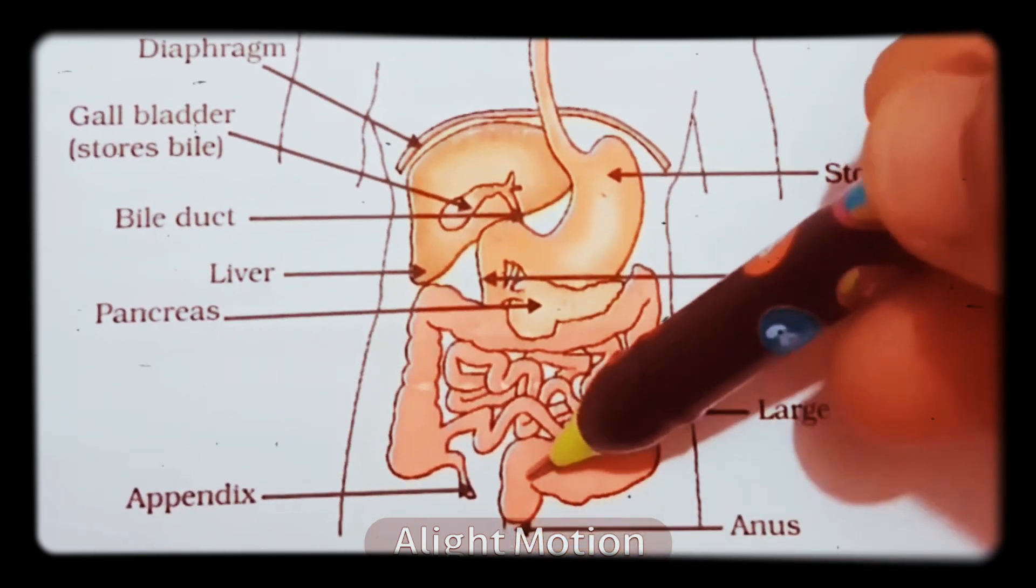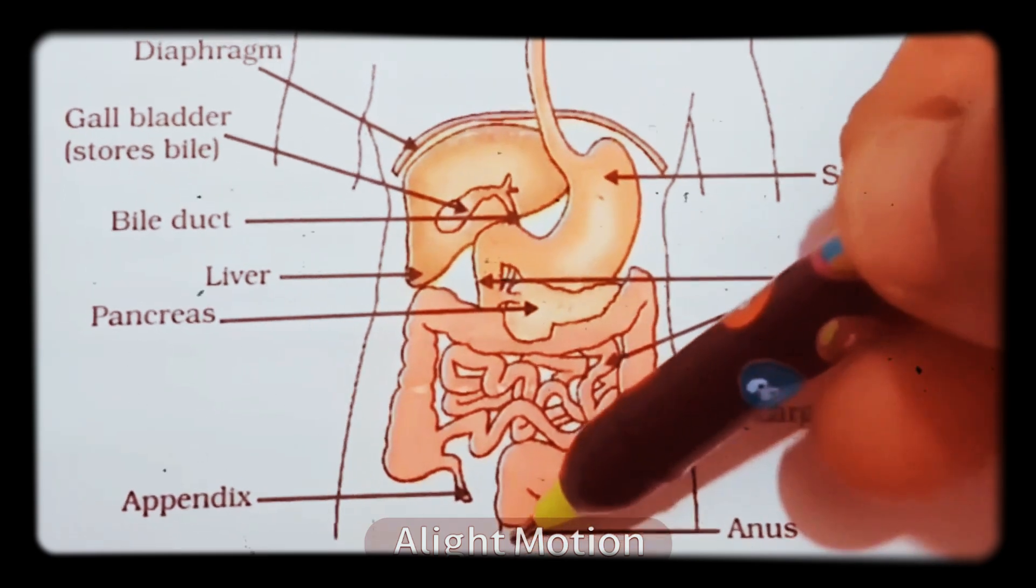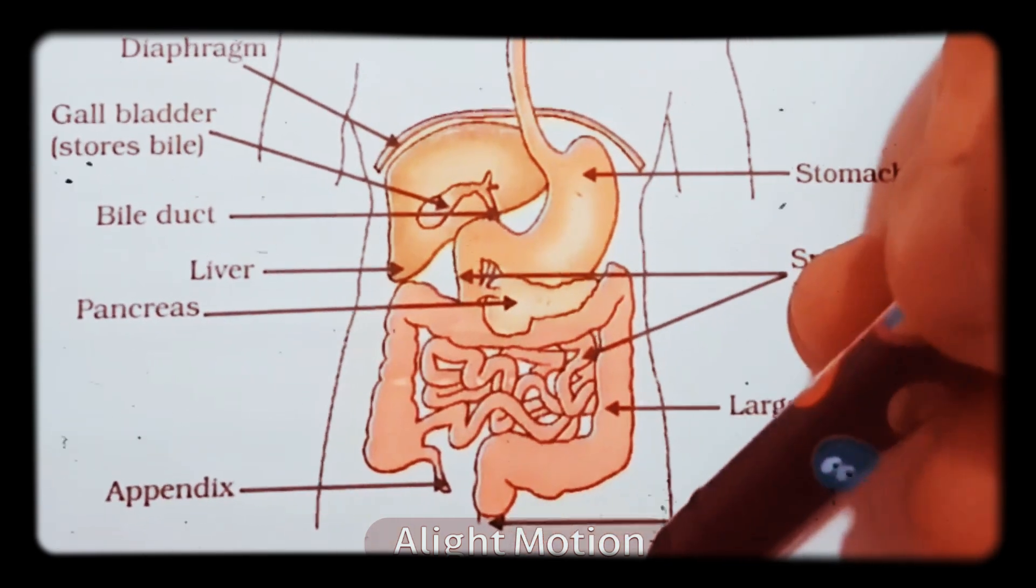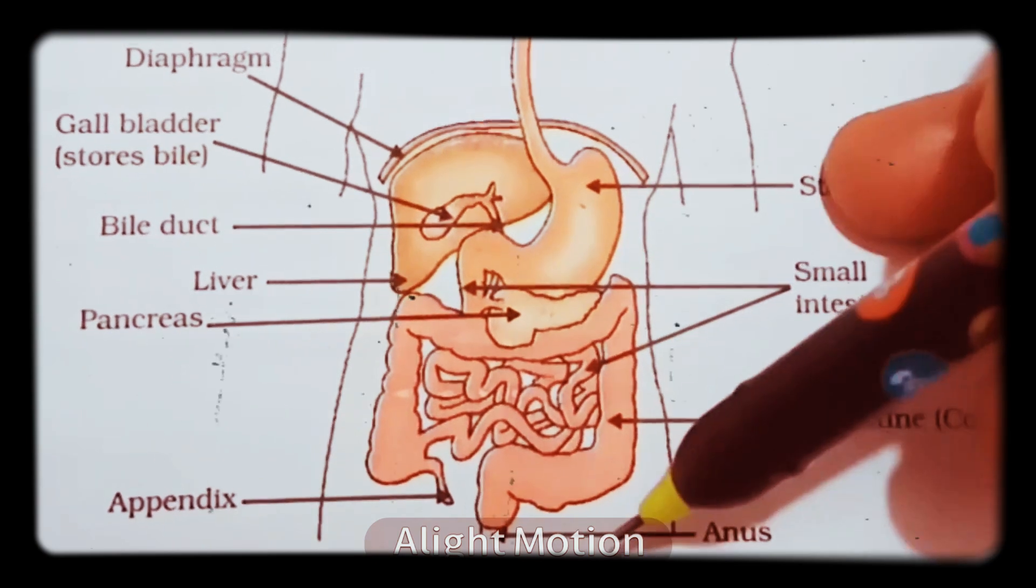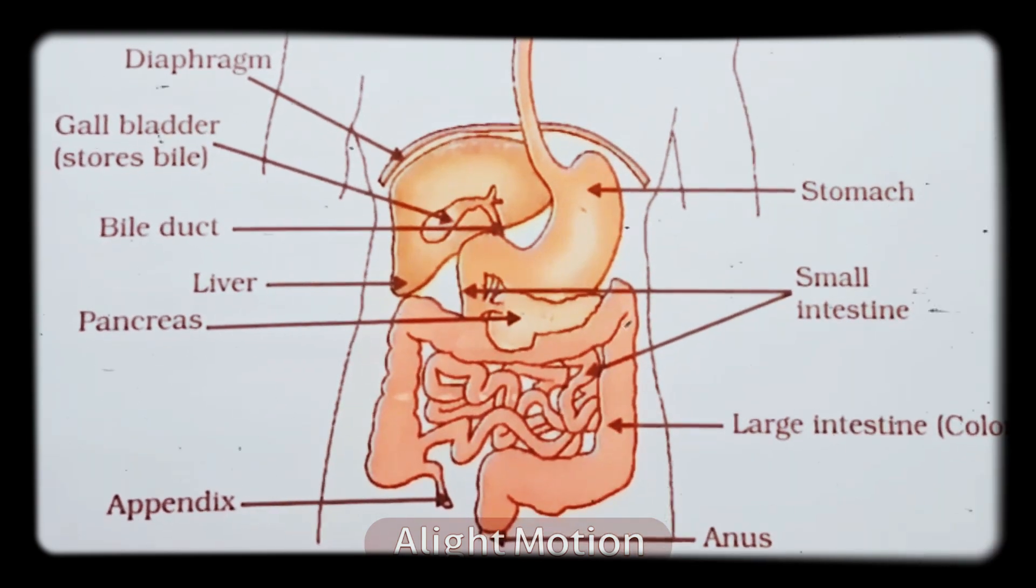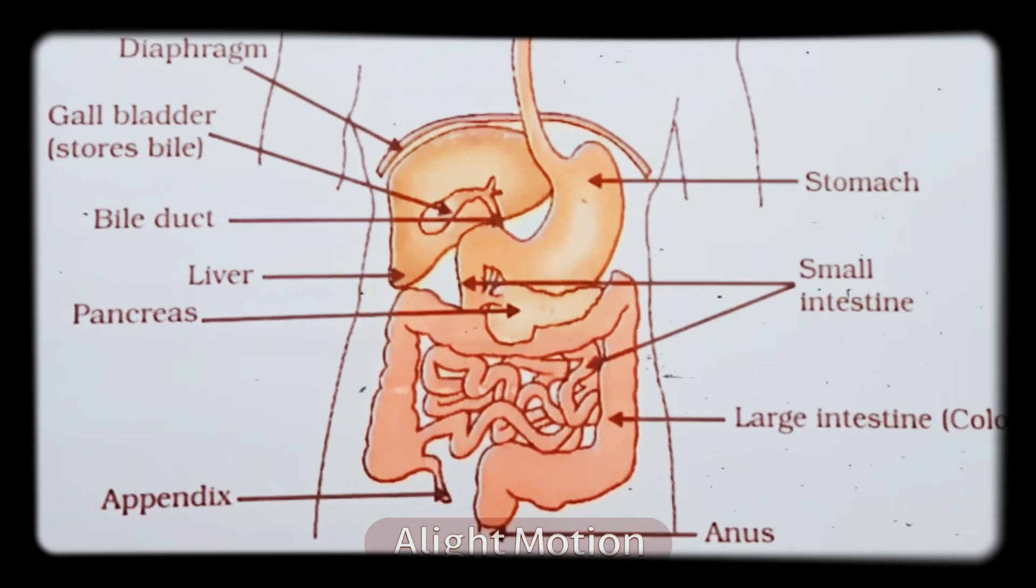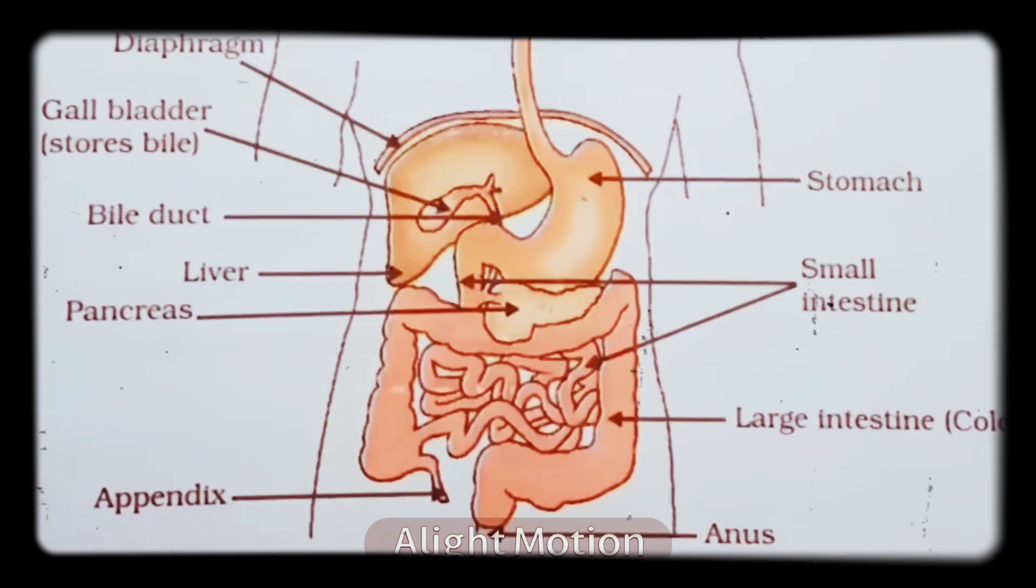The undigested or unabsorbed food gets removed through the anus region. This process is called excretion. So the human digestive system is now complete. If you have any doubts, you can comment in my comment box or give your valuable suggestions. Thank you.